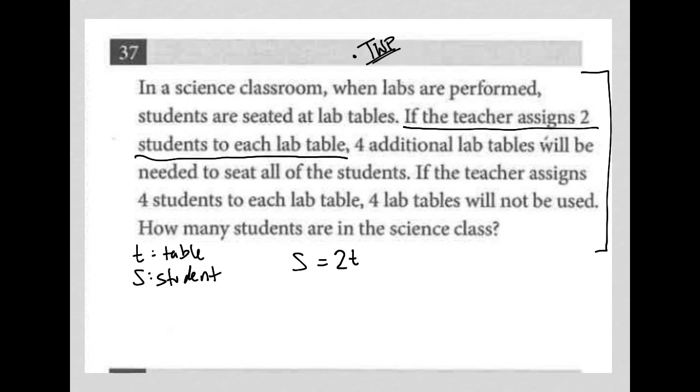But then the question says we'll need four additional lab tables to fit all the students. So not only will it be the two times T, but we'll also have an additional four tables. Right. So now we're not using T because we're told it's not a variable. We're told how many tables we need. So I'm going to add eight.